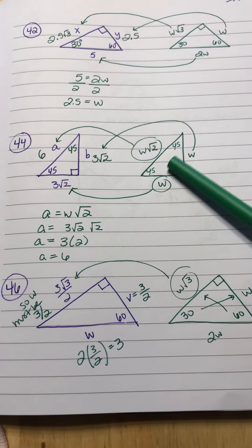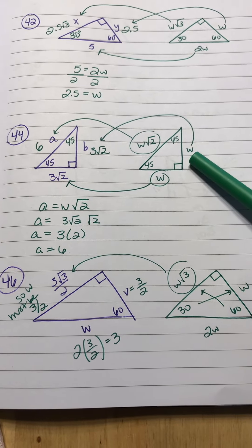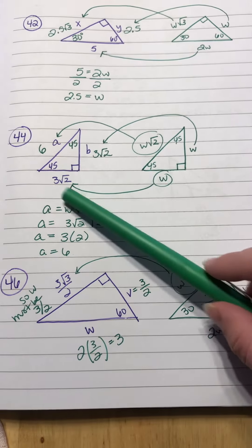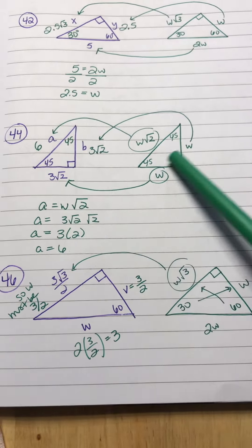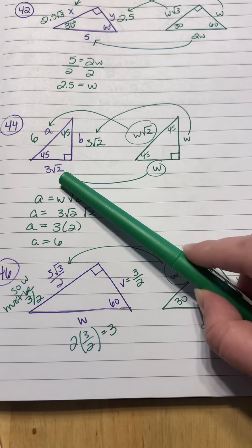A 45-45-90 has two sides of the same, so these are both your W's, and then it's W square root of 2. So if this W is 3 square root of 2, this W needs to be 3 square root of 2, so those are the two sides.